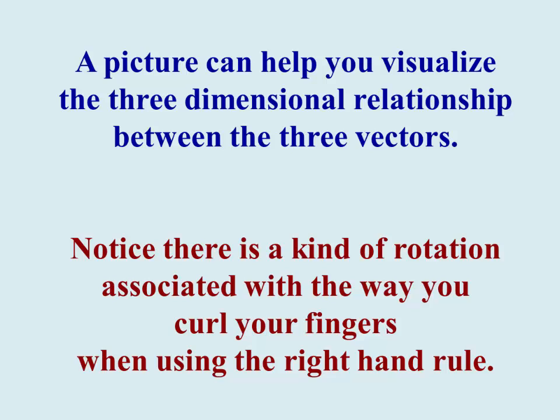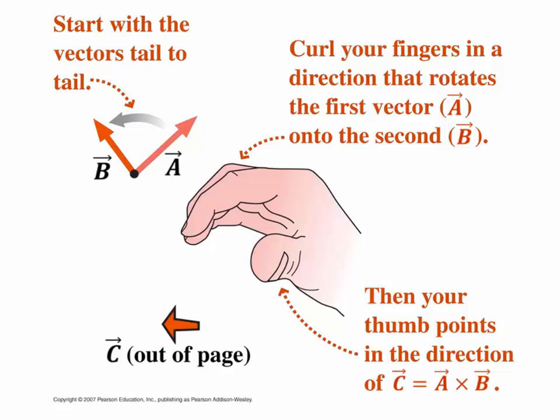A picture can often help you understand what's going on, particularly the three-dimensional relationship and the rotation associated with evaluating a cross product. When you evaluate A cross B, you should think of a rotation that takes you from A towards B, with your fingers curling from A towards B. In that case, your thumb points out of the page in the direction of C. You might notice that if I go from B towards A, my thumb will point into the paper. That's what makes this operation not commutative. You have to do A cross B to get them in the order that you want for your particular calculation.